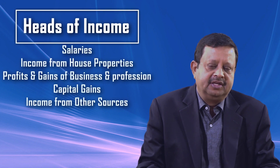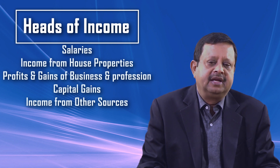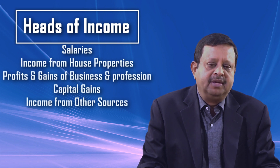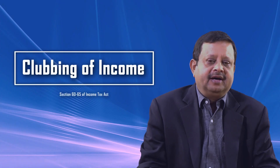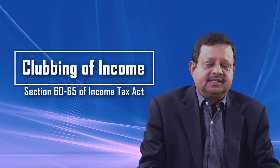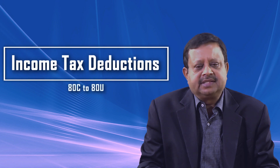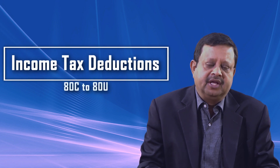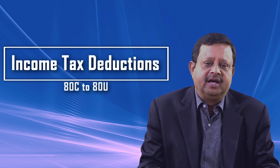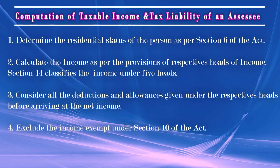Income tax in India calculates the income of a person under five heads: salaries, house property, business and profession, capital gains, and income from other sources. Our objective will be to familiarize participants with these different heads of income. Clubbing of income is a chapter where we discuss when the income of one person is chargeable to tax with another person. The Income Tax Department makes assessments based on returns filed by assessees. The Income Tax Act makes ample provisions for deductions from income, ranging from Section 80C to 80U, and participants will be familiarized with these different sections. The calculation of taxable income and tax liability of an assessee is very important, and our attempt will be to make participants able to compute both.